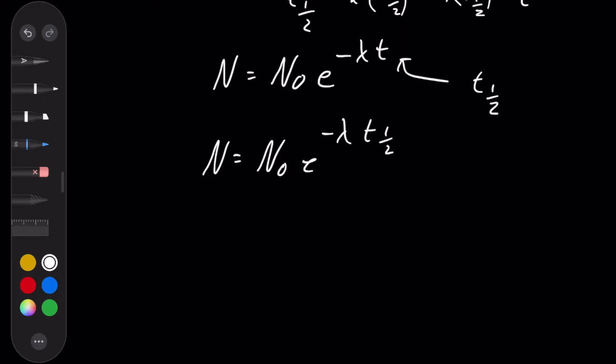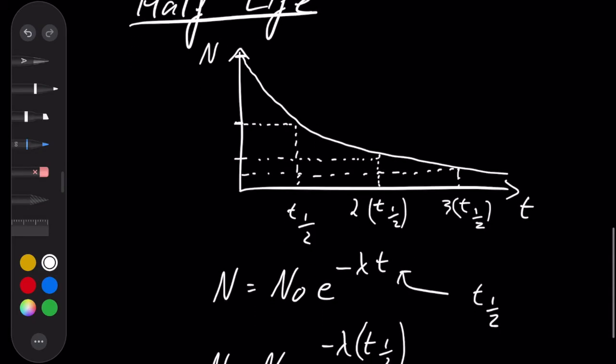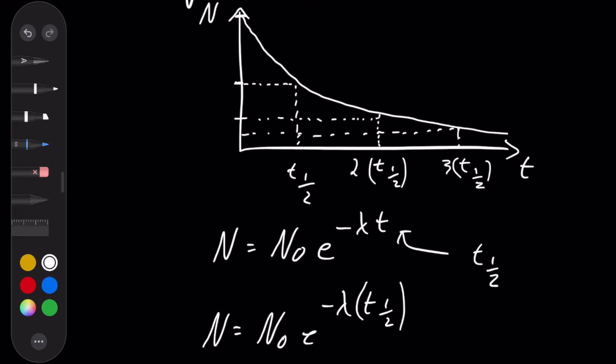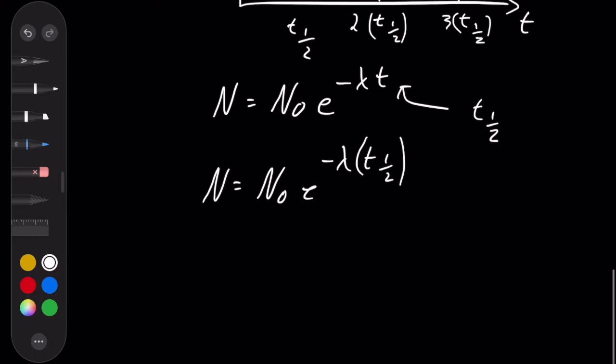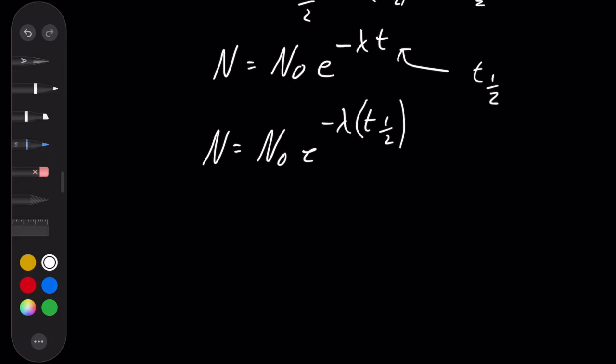But if we're now focusing on that moment in time that is the half-life, well, we know that we started with n naught being some large number of atoms. It will have dropped by exactly half. So I can say that this thing on the left-hand side is actually n naught divided by 2.